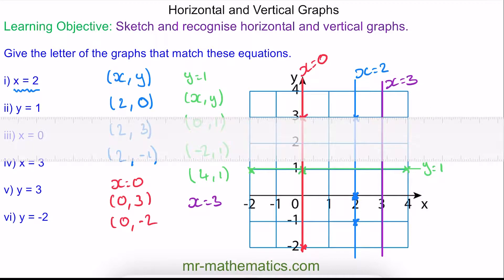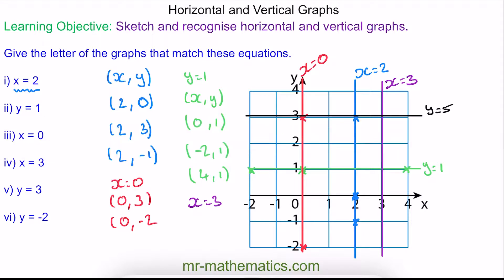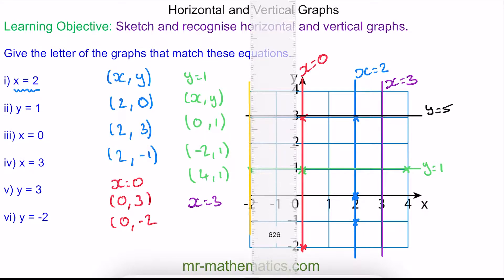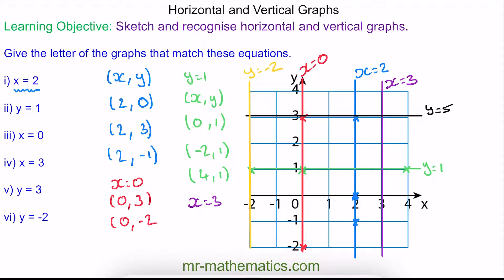For question 5, y equals 3, which is the line shown here. And finally, for question 6, y is equal to negative 2. So now we can sketch all these straight line graphs. Let's move on.